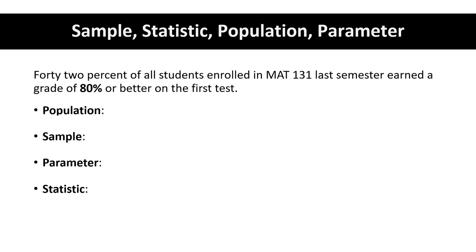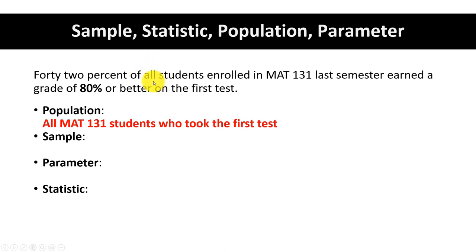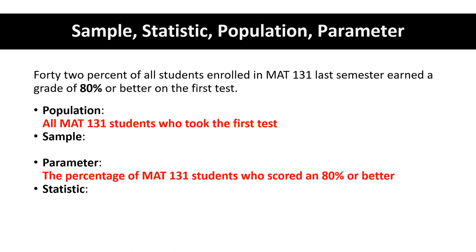42% of all students enrolled in MAT 131 last semester earned a grade of 80% or better on the first test. The population would be all MAT 131 students who took the first test that semester — we know this is the population because of the keyword 'all.' If you see 'all' or 'entire,' that is a red flag that we are talking about a population. There is no sample. The parameter is the percentage of MAT 131 students who scored 80% or better, which is 42%. Because there was not a sample, we don't have a statistic for this situation.